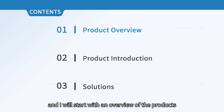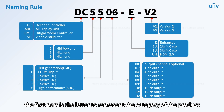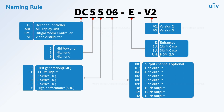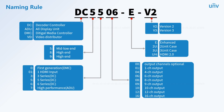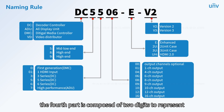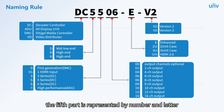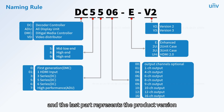I will start with an overview of the products, beginning with the naming rule. Our product name consists of six parts: the first part is a letter representing the product category; the second is a number for market positioning; the third is a number for the product series; the fourth is two digits for the number of output channels; the fifth is a number and letter suffix; and the last part represents the product version.